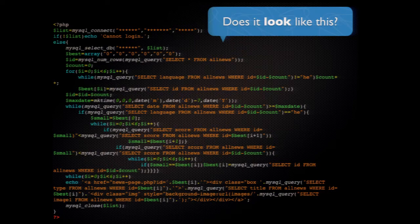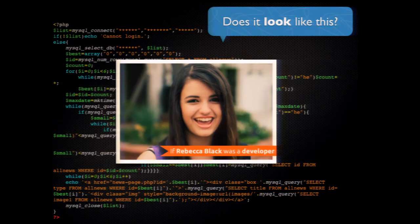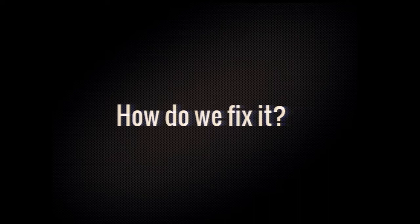I didn't just copy and paste a bunch of stuff here — this is actually a code sample from Stack Overflow, posted as a question. This is the equivalent of Rebecca Black writing code. Hopefully we don't all write that code, but how do we fix it?